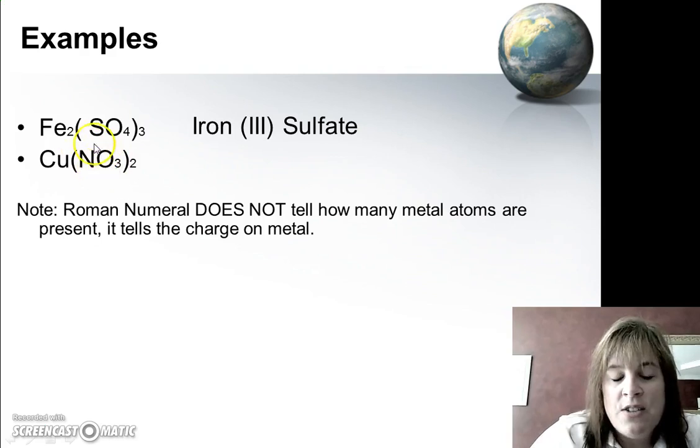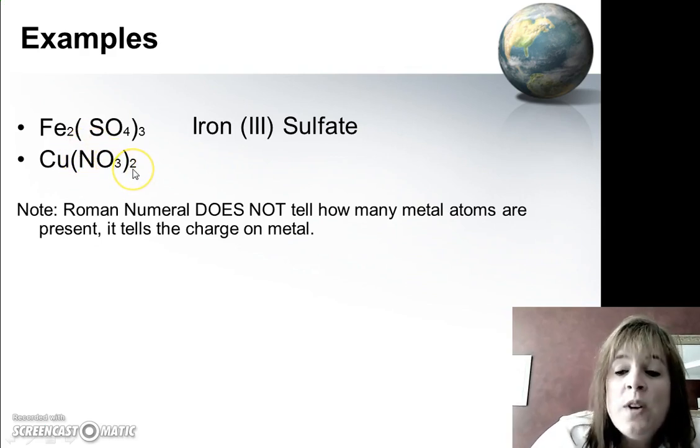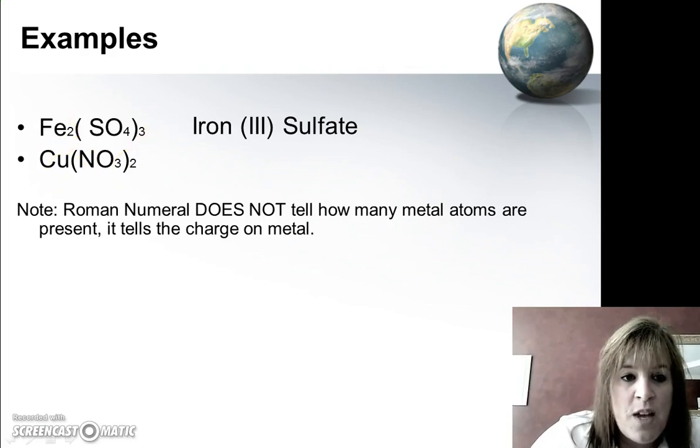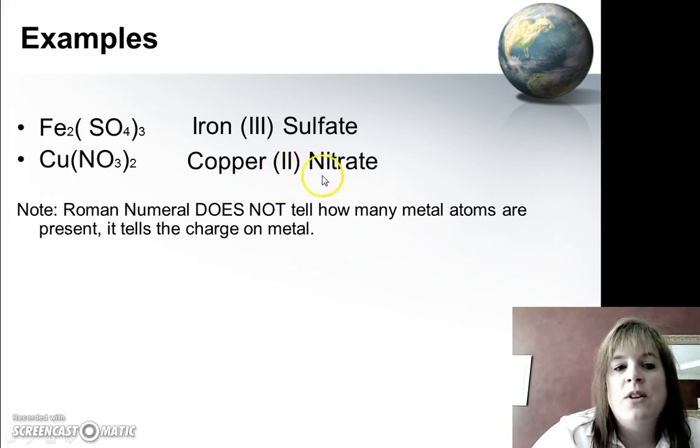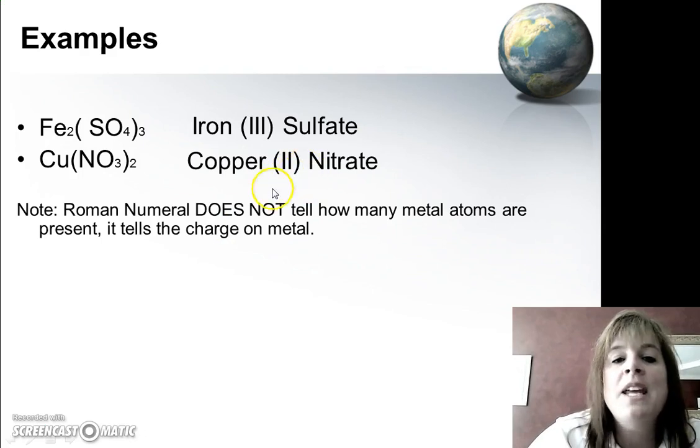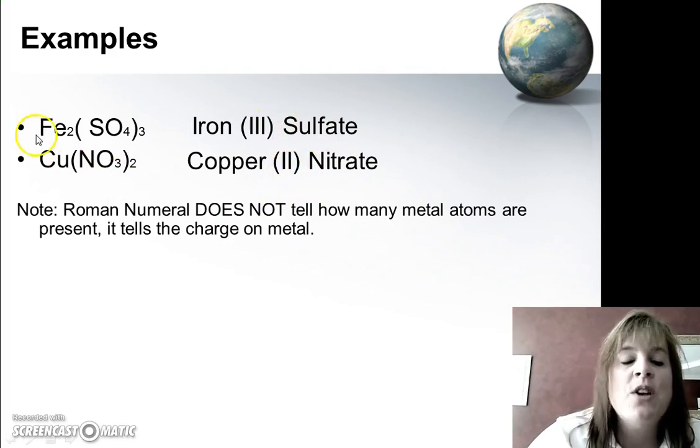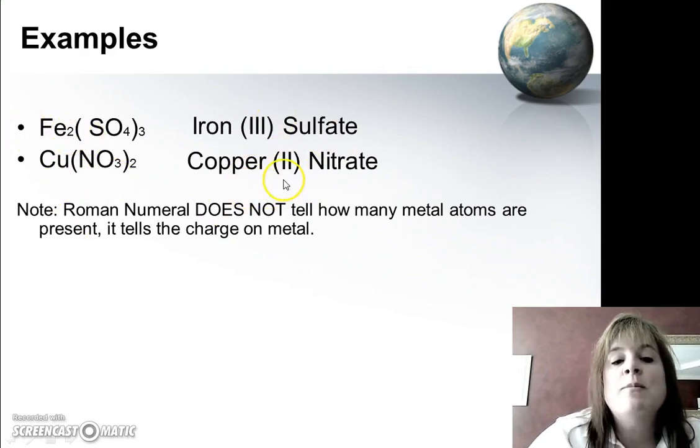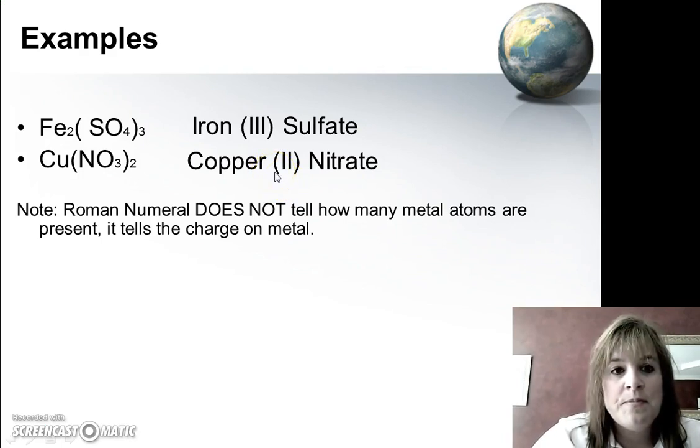And what about here? Here's nitrate. Nitrate has a charge of minus 1, and I have two of them, which means that this must be copper plus 2. So I write copper 2 nitrate. Now remember, the Roman numeral does not tell me how many I have. I don't have two coppers or three irons. It tells me the charge on the metal.